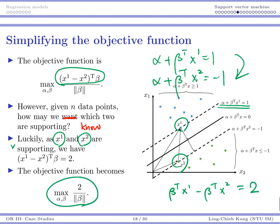So we don't really have that problem. Our objective function becomes this one. We simply want to find alpha and beta to maximize this, where your denominator is the norm of your beta vector, and the numerator is just a constant.